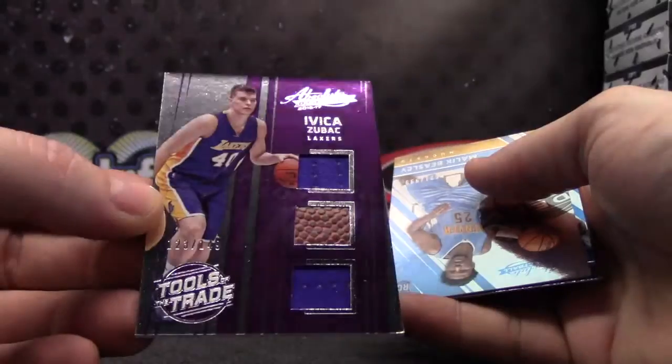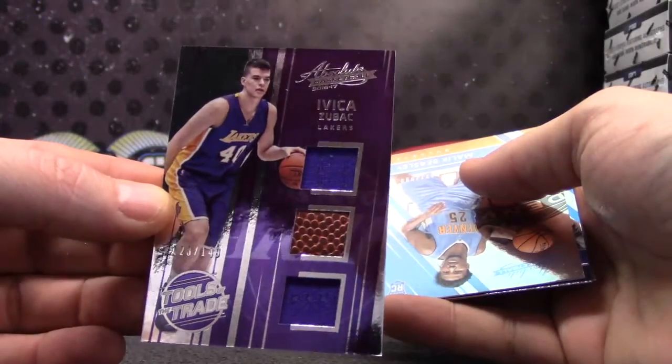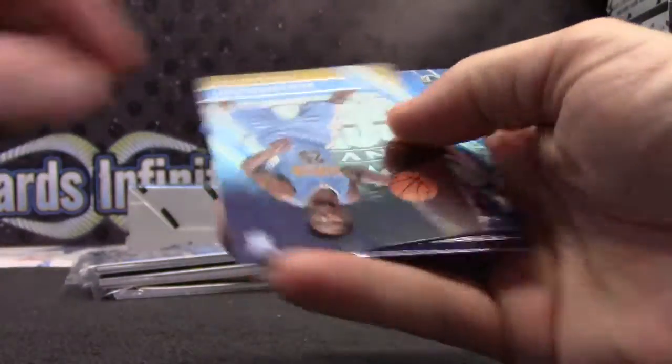Evika Zubak double jersey basketball 149. Numbered to 999, Malik Beasley.